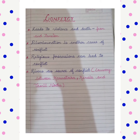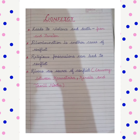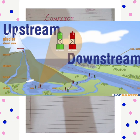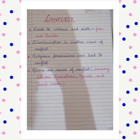A river can also be a source of conflict between states. Sharing of river water between different states that the river flows through becomes an issue of conflict. For example, the Kaveri water dispute between Karnataka and Tamil Nadu: the water stored in the Krishna Raj Sagar Dam in Karnataka is used for irrigation in a number of districts and for meeting the needs of the city of Bengaluru. The water stored in the Mettur Dam in Tamil Nadu is used for crops grown in the delta region. The downstream dam in Tamil Nadu can only be filled if water is released from the upstream dam in Karnataka. Therefore, both states cannot get as much water as they need, and this leads to conflict. The central government has to step in and work out a fair distribution for both states.